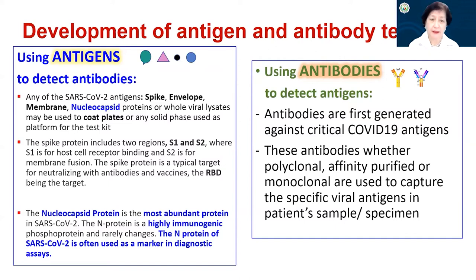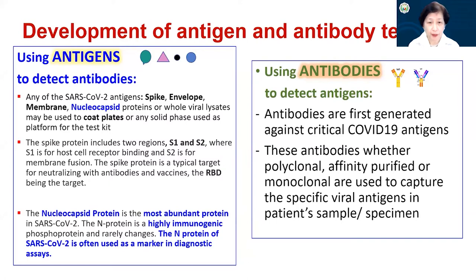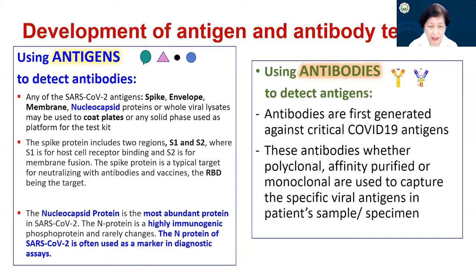The nucleocapsid protein is the most abundant protein in SARS-CoV-2. It is a highly immunogenic protein and rarely changes — it is relatively stable because the genes encoding for this protein are involved in transcription and replication. Because of these properties, the N protein of SARS-CoV-2 is often used as a marker in diagnostic assays. It is a major, abundant, highly immunogenic, and dominant protein and therefore has very good use in developing diagnostic kits.